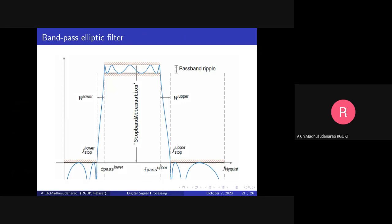This is called the upper passband cutoff frequency and this is the lower passband cutoff frequency — you can call them FP1 and FP2. This corresponds to the lower stopband cutoff frequency and this corresponds to the upper stopband cutoff frequency — you can call them FS1 and FS2.